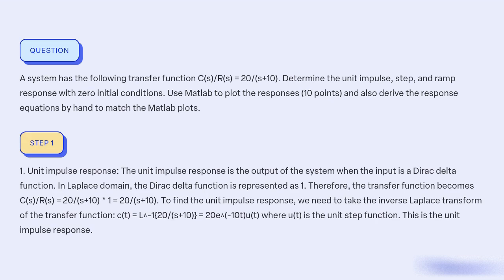Unit impulse response: The unit impulse response is the output of the system when the input is a Dirac delta function. In the Laplace domain, the Dirac delta function is represented as 1. Therefore, the transfer function becomes C(S)/R(S) = 20/(S+10) * 1 = 20/(S+10). To find the unit impulse response, we take the inverse Laplace transform: c(t) = L⁻¹{20/(S+10)} = 20e^(-10t) * u(t), where u(t) is the unit step function. This is the unit impulse response.